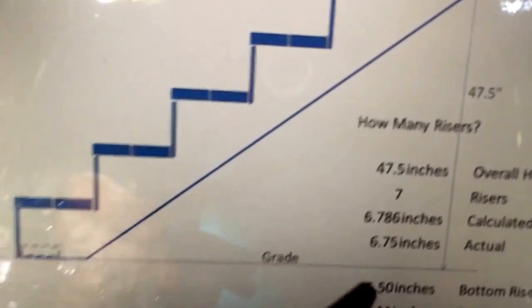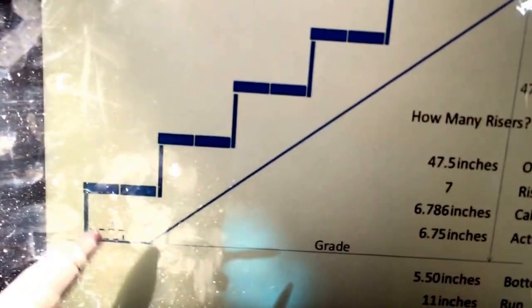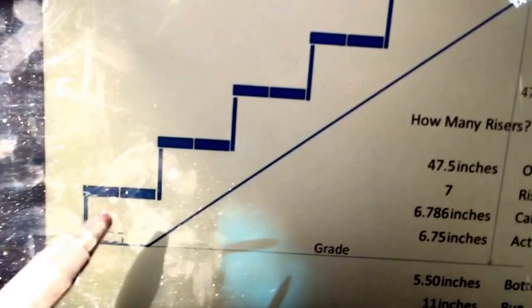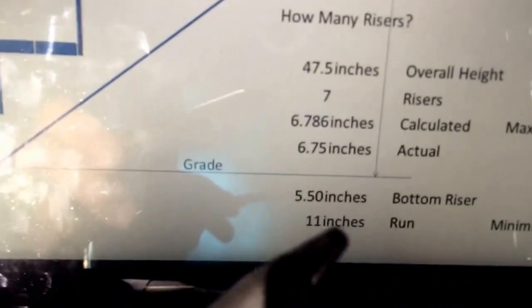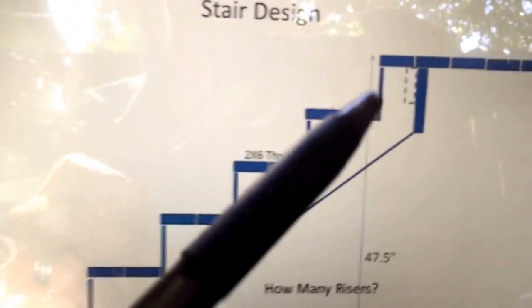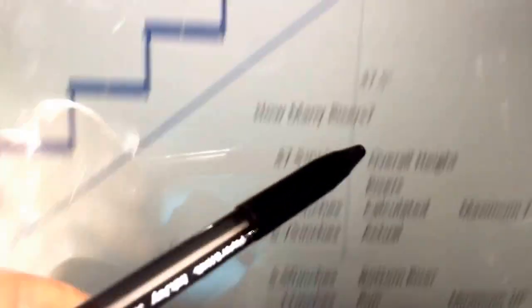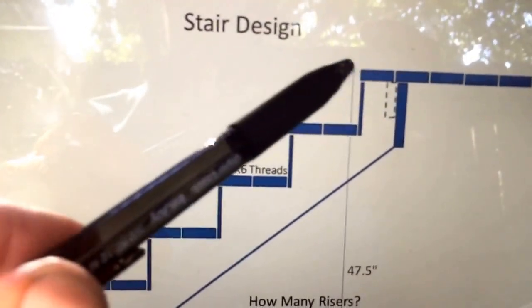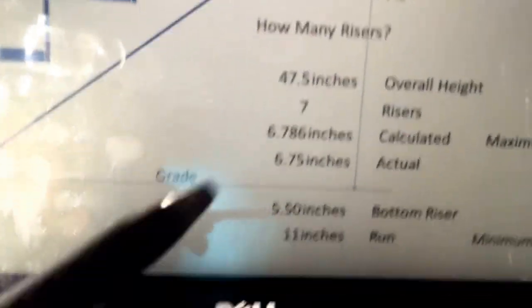So what we need to do is we're going to actually adjust this bottom step. Instead of being five and a quarter inches on the stringer from the grade to the bottom of this tread, we're going to take it up to five and a half inches. That gives us the full 46 inch dimension from the bottom of this tread to grade and 47 and a half inches from the top of the deck to grade.